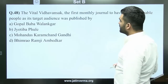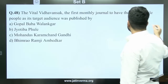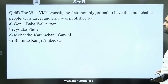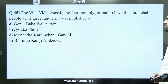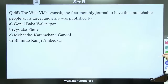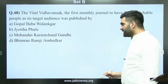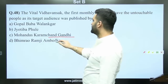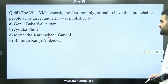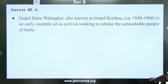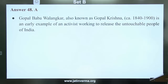Question 48: Vital Vidhavansak — the first monthly journal to have untouchable people as its target audience — was published by whom? Options: Gopal Baba Walangkar, Jyotiba Phule, Mohandas Karamchand Gandhi, or Bhimrao Ramji Ambedkar. The answer is A — Gopal Baba Walangkar, also known as Gopal Krishna.